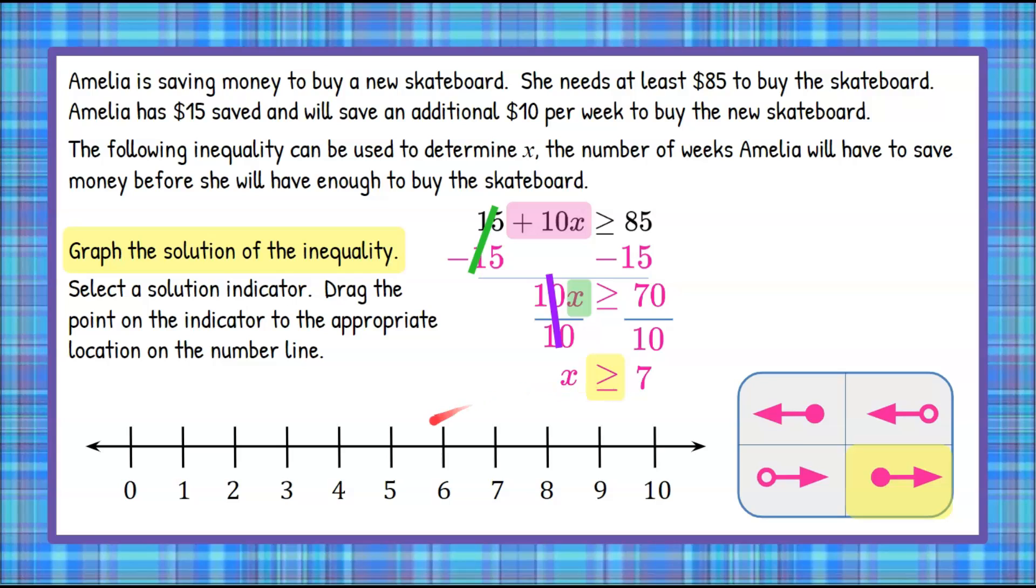So now we're going to come over to our number line and put our closed circle on the 7, with an arrow pointing to the right because it's 7 and all the values greater. Then we can take our indicator and drag it if we were on the computer. So we have a closed circle, meaning it can be the number 7 and all the values greater than 7 on the number line. And that is the graph of the solution of this inequality.